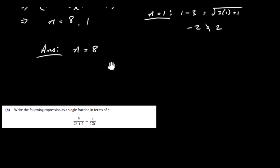Let's have a look at part B. So in part B, we have to write the following expression as a single fraction in terms of t. So we have 4 over 2t plus 1 minus 7 over 12t. So we've just got to add these two fractions. So our lowest common multiple is going to be 2t plus 1 times 12t.